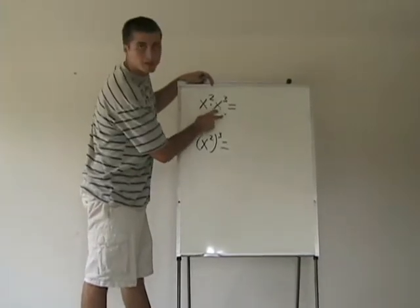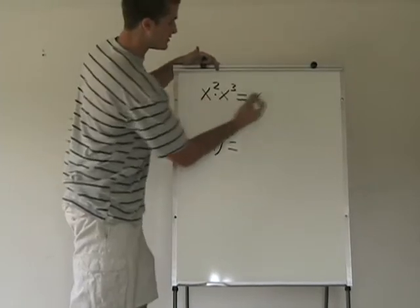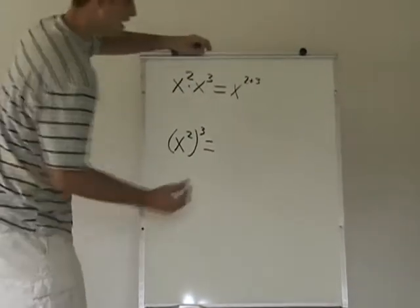The rule for multiplication of exponents is that you add the exponents. So this is going to be x to the 2 plus 3. 2 plus 3 gives me 5,